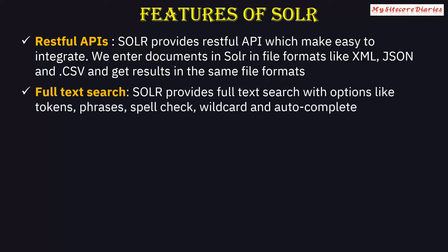The second feature is full-text search. Solr provides full-text search with different options: you can search with a token, search with phrases, use spell check — even if you put the wrong spelling it gives results — wildcard search using a star to get all results, and autocomplete. These are the kinds of functionality Solr provides.